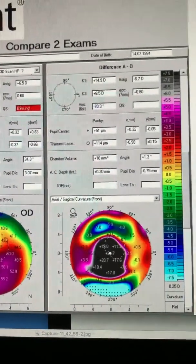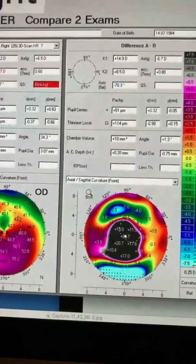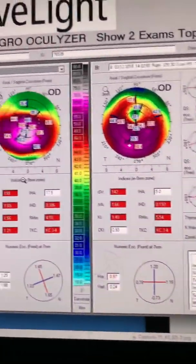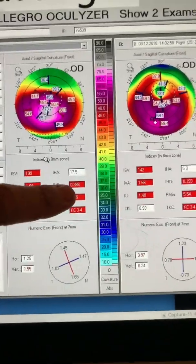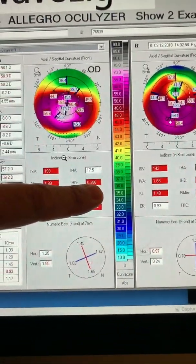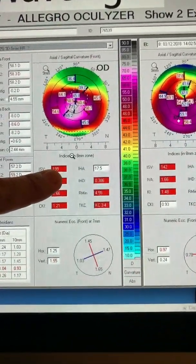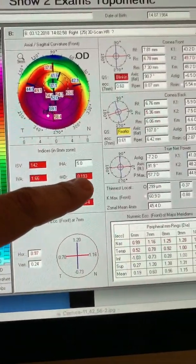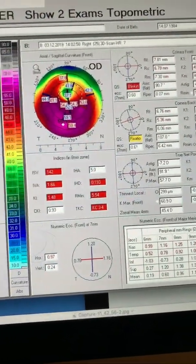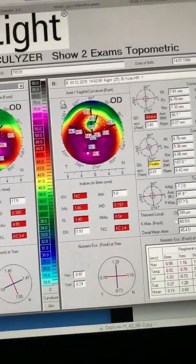Let's go see the difference maps on topometric indices. We can see why this improvement, we went from an IHD from 386, ISV 199, extreme numbers, to 193 and 142. Obviously, the secret here is that this was a very central cone.